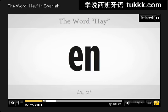The word 'en' means both 'in' and 'at' — a very, very useful preposition. As in, somebody is in a place or at a place — the word is 'en.'